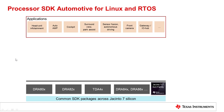Processor SDK Automotive for Jacinto 7 is TI's common software development kit which spans across the Jacinto 7 family of SoCs. You can use this SDK to develop various automotive specific applications like ADAS applications for surround view, park assist, sensor fusion, front camera, as well as gateway applications, IO hub, and infotainment applications.